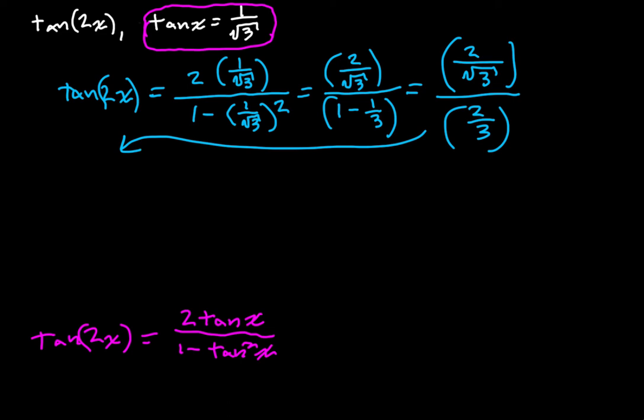So this, when we're dividing by a fraction here, it's the same as multiplying by its reciprocal, right? So this is going to be the same as two times three divided by square root of three times two. The twos cancel.